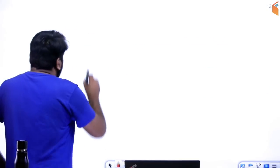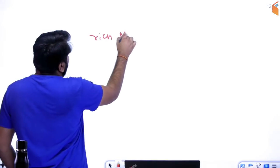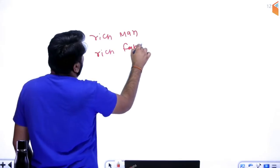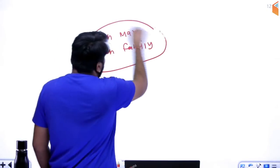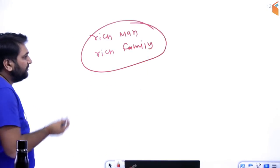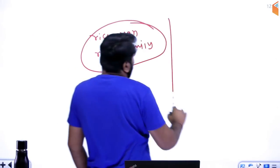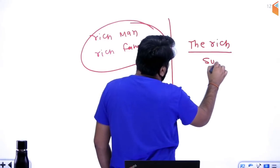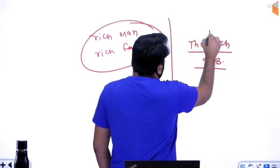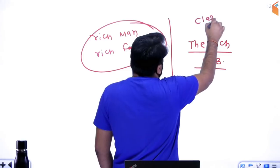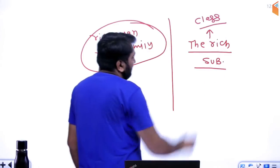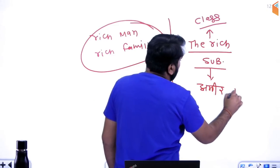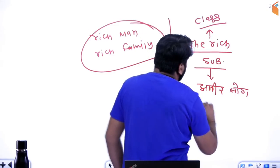Toh jaise mein aap logon ke saamne baat karun — yeh word hai 'rich.' Rich aapka adjective hai. 'Rich man,' 'rich family' — aap logon ne suna hoga. Is tariqe se aap bahut baar istamal karte hain 'rich' word ka, jiska matlab hota hai 'ameer.' 'The rich' ka prayog hum sentence ke subject ke roop mein kar sakte hain, aur yeh basically ameer logon ki poori class ko, poore group ko represent karne ke liye hota hai. Iska arth: ameer log.